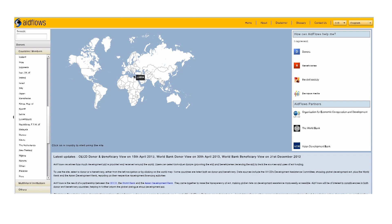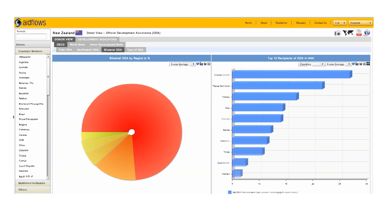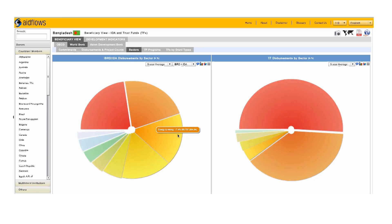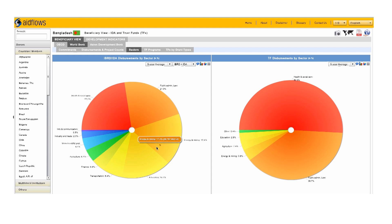With aidflows, the data comes alive. Information is presented in clear visualizations and displayed on a country-by-country basis. Dynamic charts, graphs and tables are easy to see and download. You can use, compare and analyze data right on the site.